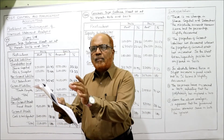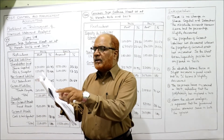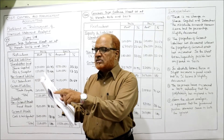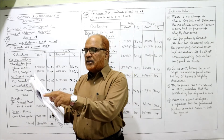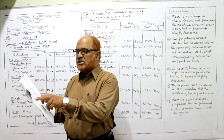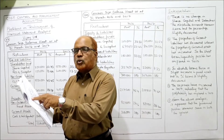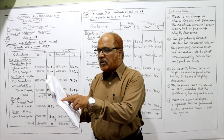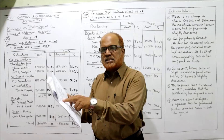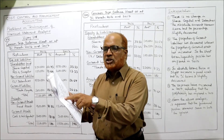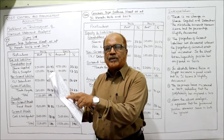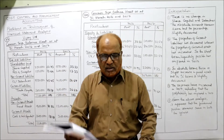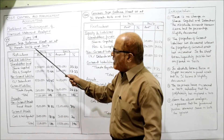The format is completely given: equity and liabilities — shareholders' fund, share capital, reserves and surplus; non-current liabilities — 12% debentures; current liabilities — trade payable; then the total of liabilities. Assets consist of non-current assets, fixed assets, current assets, cash and cash equivalents, and total. The format is completely given and amounts are given.